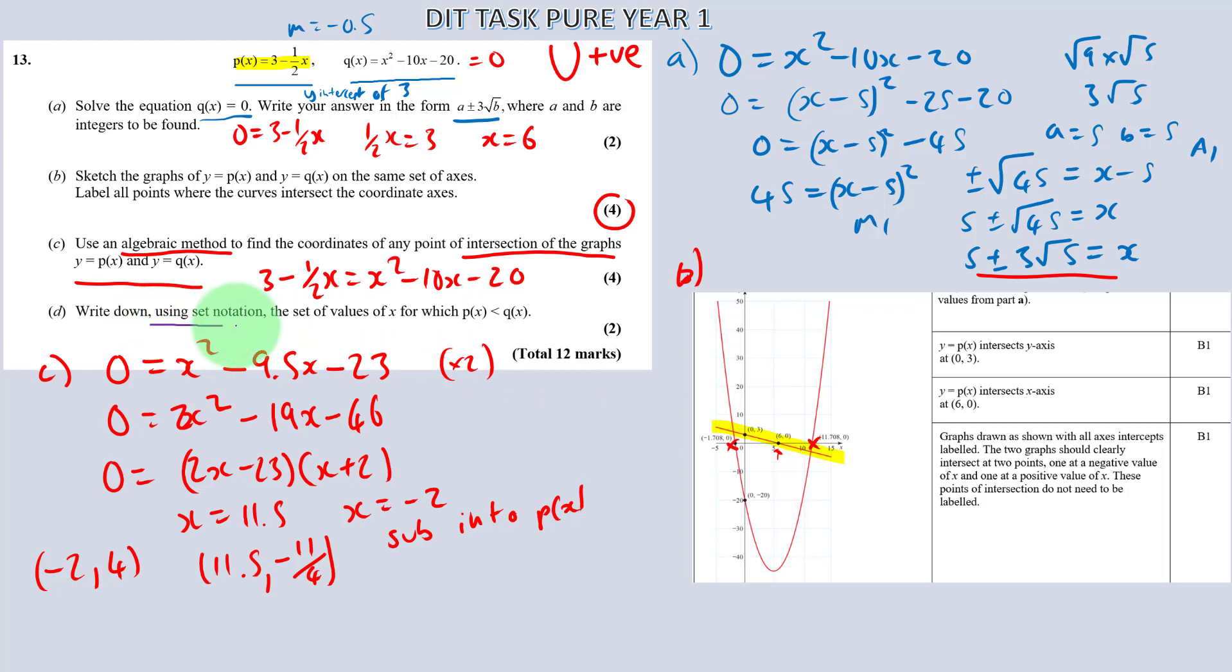Now for part d. Write using set notation for the values of x which px is less than qx. So let's look at this graph. That would have helped you in b if you got this right. When px is less than qx. So this is px. Now can you see from here this is above qx. This is qx here. This graph here. So from this intersection here you can see it's anything less than minus 2 and anything over here. And we've got the answers from c. So to get, let's write d here, get one method mark. That's going to be when x is less than minus 2 or x is greater than 23 over 2. Or you can write 11.5.